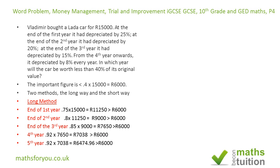At the end of the fifth year, again because it's gone down by 8%, it's now 0.92 of what it was worth at the end of the fourth year. So 0.92 times 7,038 rubles gives us 6,474.96 rubles — and that's still more than 6,000.